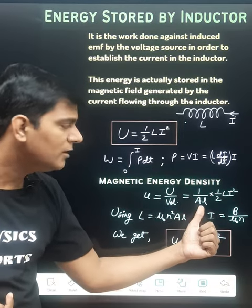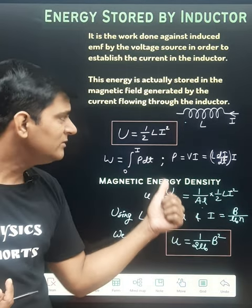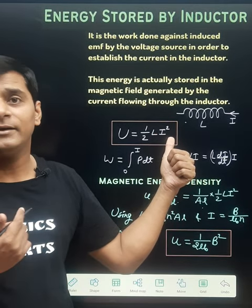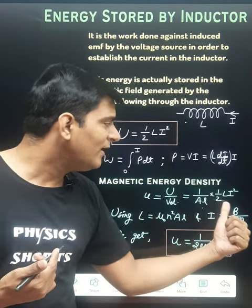So it is 1 upon AL, and u is the total energy stored in this magnetic field, which is half LI squared.